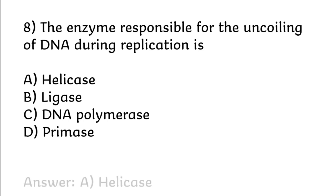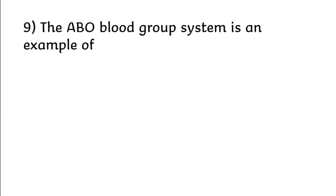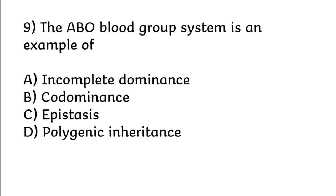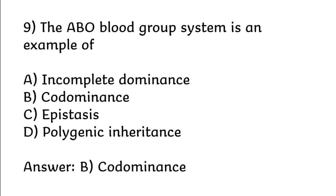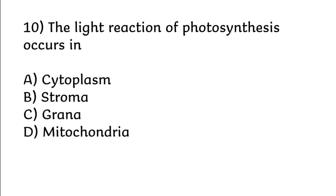Correct answer is option A: helicase. The ABO blood group system is an example of: incomplete dominance, co-dominance, epistasis, polygenic inheritance. Correct answer is option B: co-dominance. The light reactions of photosynthesis occur in: cytoplasm, stroma, grana, mitochondria. Correct answer is option C: grana.